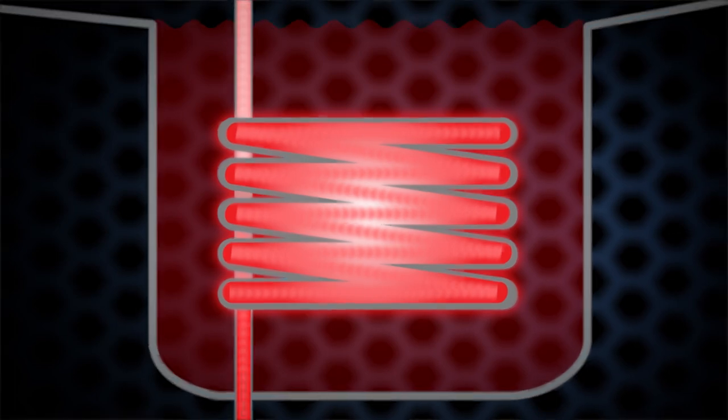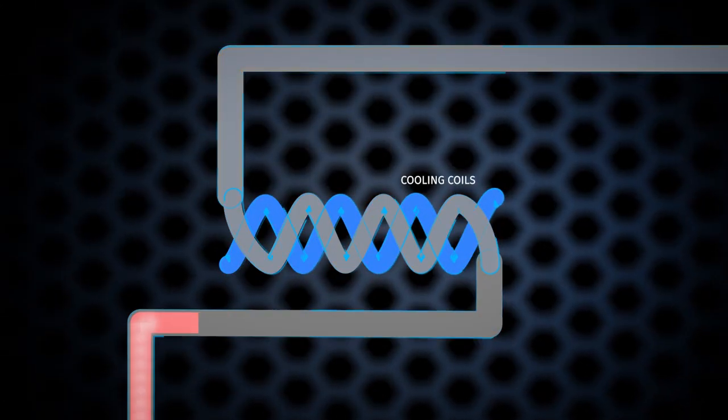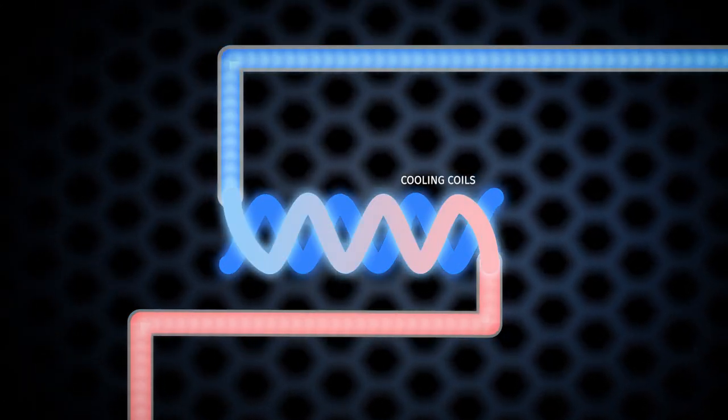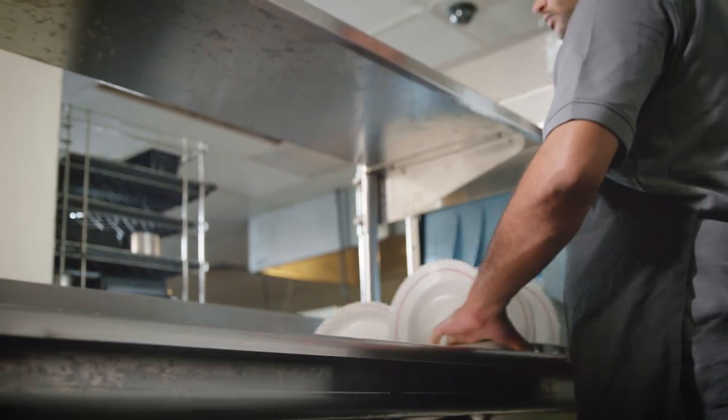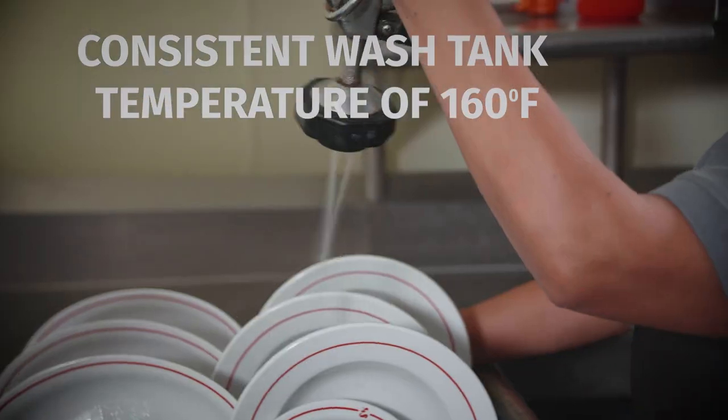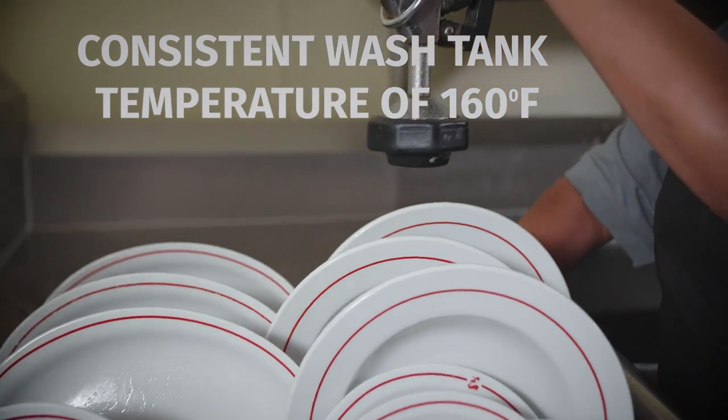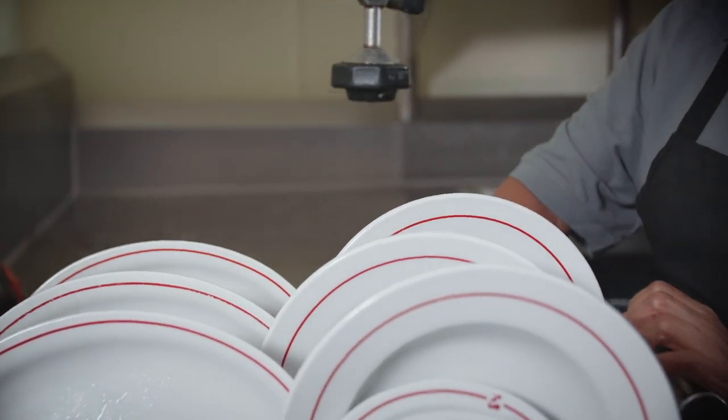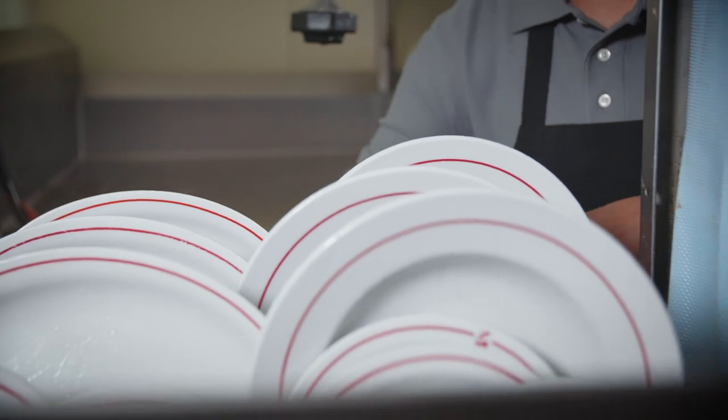The refrigerant then passes through the cooling coils before returning to the compressor. This highly efficient closed-loop design reduces energy costs and ensures consistent wash tank temperatures of 160 degrees or higher while delivering best-in-class wash performance and reliability.